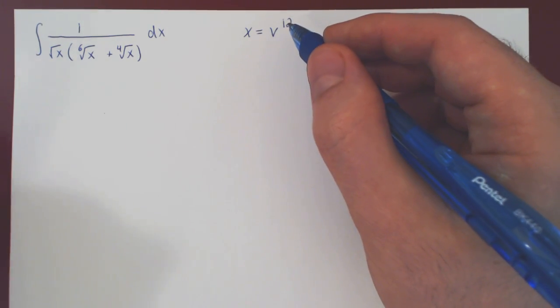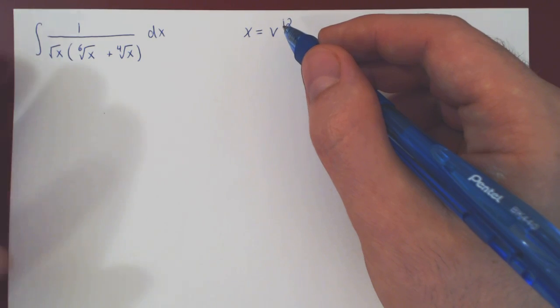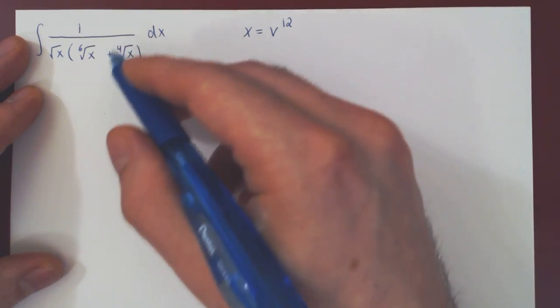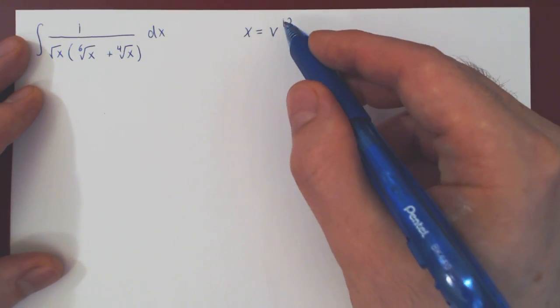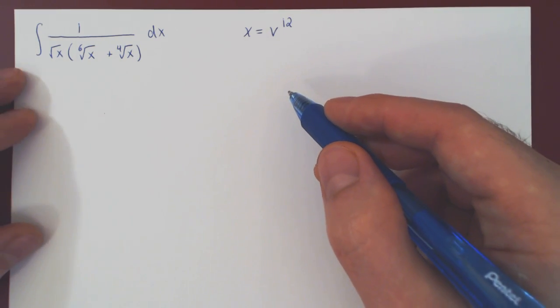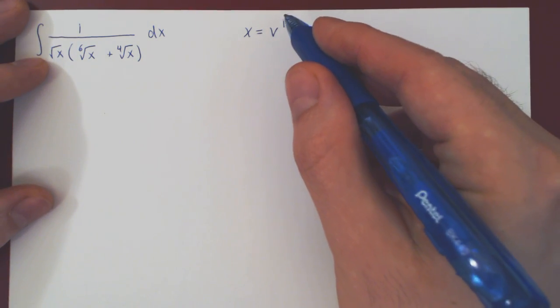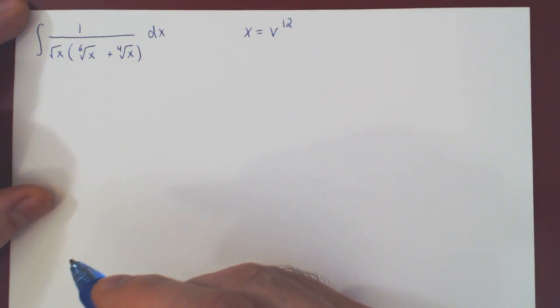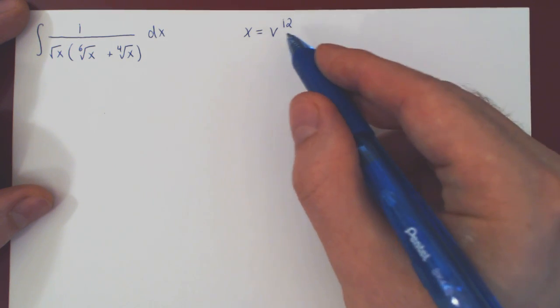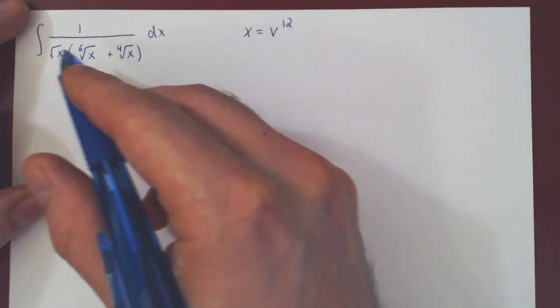So always be careful about this. You can try if you want to see what happens. If instead of v to the 12 you use v to the 24 and you will see that you will be artificially making the rational function more complicated, therefore artificially making your life more complicated. It's always true for the smallest integer divisible by each fractional power.